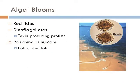Algal blooms, also known as red tides, are caused by ocean-dwelling protists known as dinoflagellates. Dinoflagellates reproduce rapidly in the presence of natural fluctuations of chemicals in the ocean. As a byproduct of their lifestyle, they produce chemicals that are toxins to fish and shellfish. When shellfish like oysters are harvested, they retain those chemicals and can poison humans.